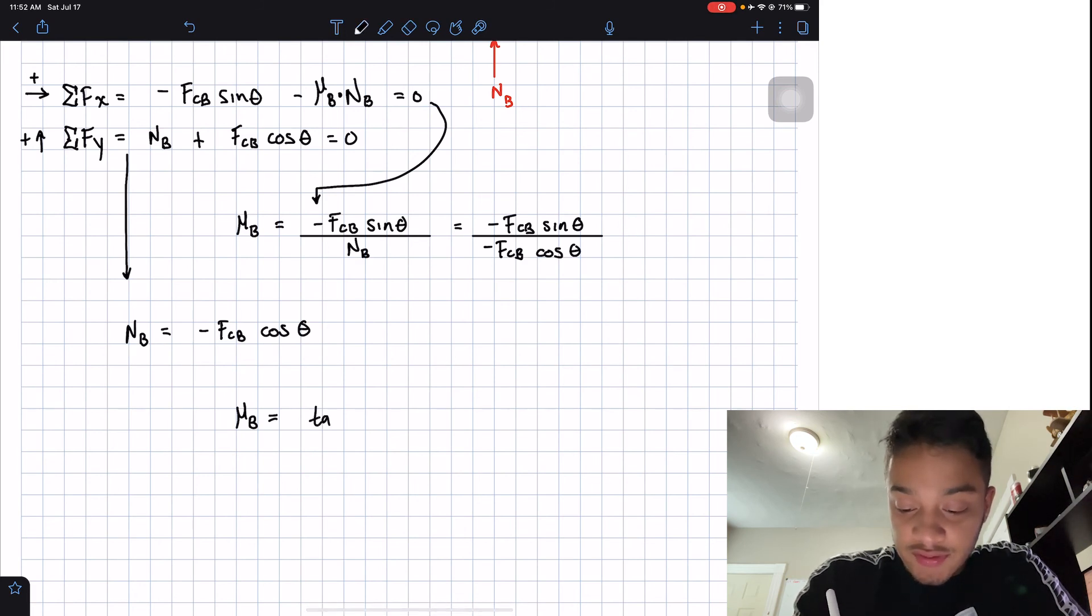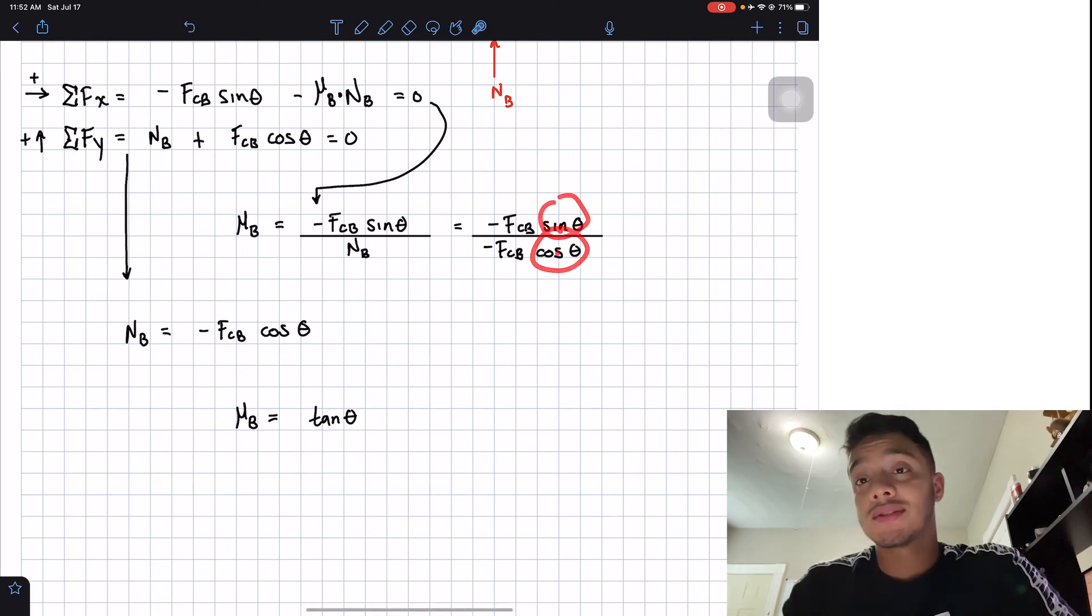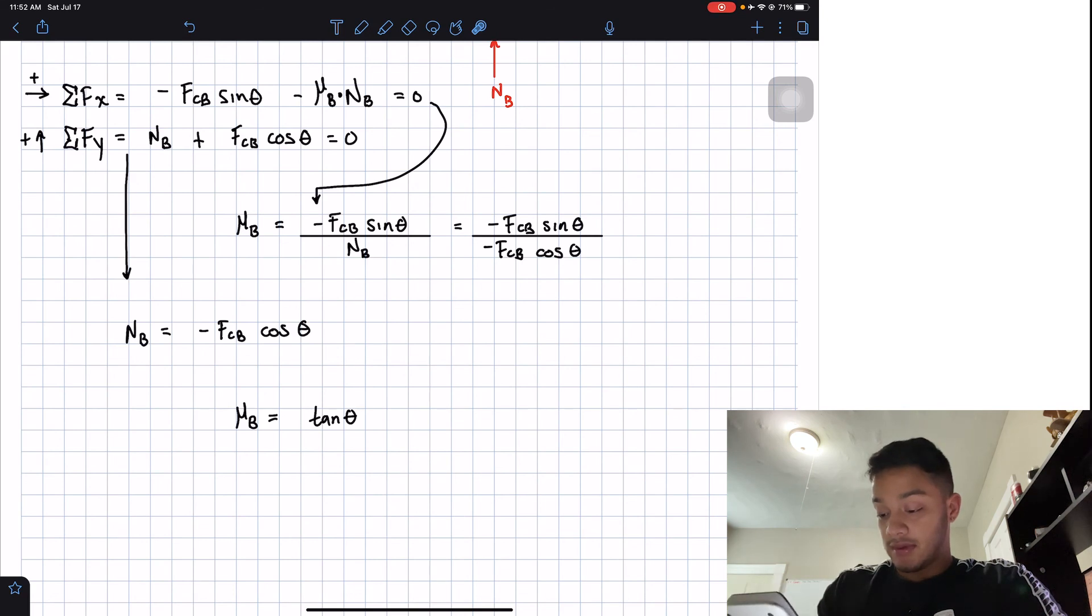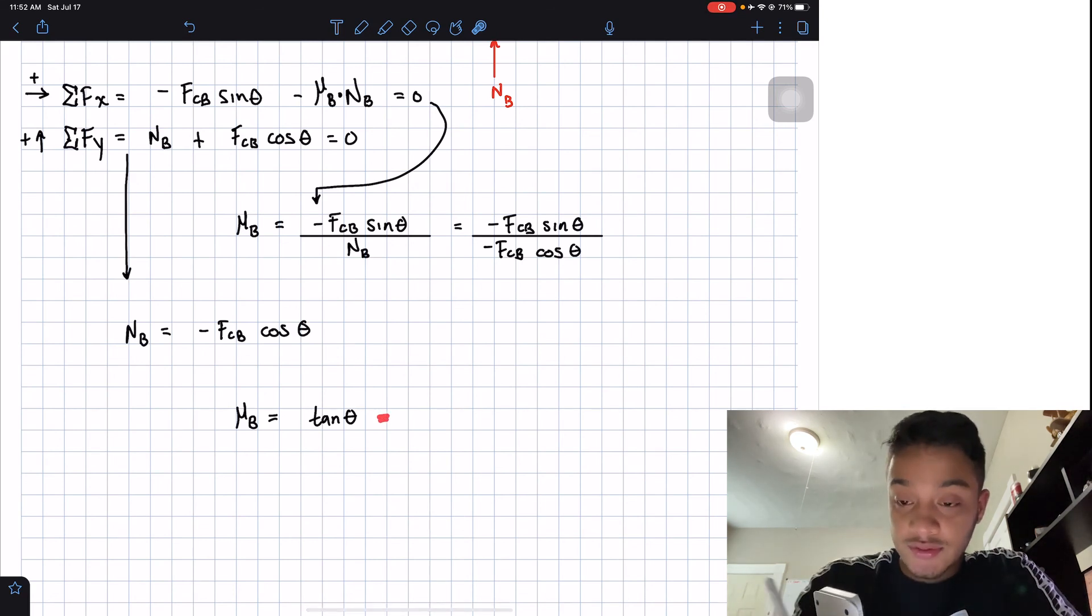So we're going to end up with mu's of B equals to... Also, we can reduce this into basically tangent of theta because it's sine over cosine. That's tangent. We're going to plug that. So tangent of 30 degrees. And we end up having equal to 0.577.